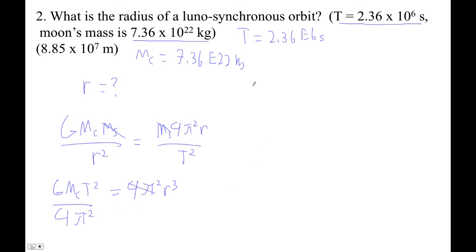And then we get r is, and you're going to have this as one of your things. It's the cube root of GMcT squared over 4 pi squared. Okay. Now to do this, to do this on the calculator.